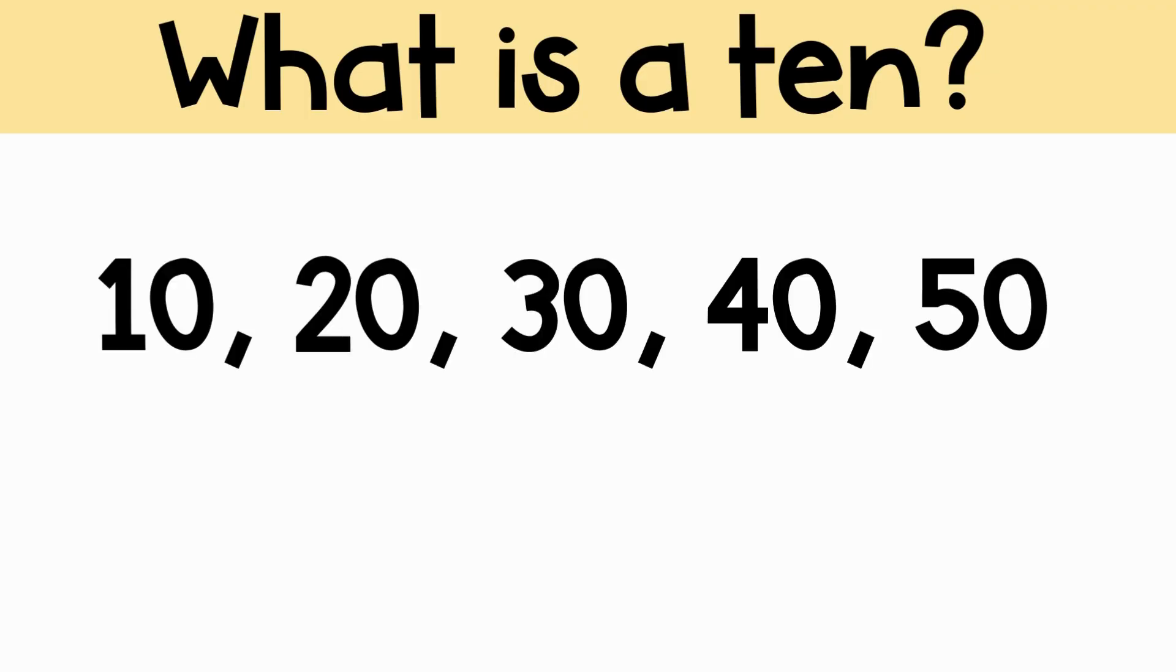All these numbers are tens because you get them when counting by tens. 20 is a ten, 30 is a ten, 40 is a ten, and so on. Saying a ten means any number when counting by tens, not only the number 10.